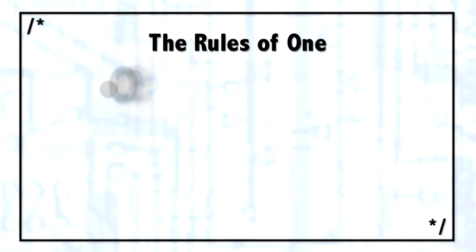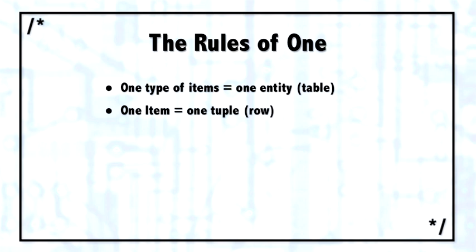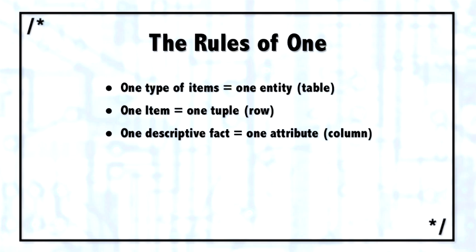Let me explain. If you take one type of items or one group of things, they should all be together inside of one table. Each one item should be represented in a table by one row or one tuple. Each one descriptive fact or one attribute about those items should be represented in one attribute or one column in the database.